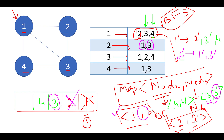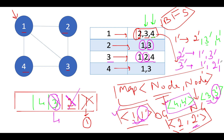Next, we retrieve node 3 from the queue and check all its connections: 1, 2, and 4. For neighbor 1: present in the map — retrieve 1' and create a connection between 3' and 1'. For neighbor 2: present in the map — retrieve 2' and establish a connection between 3' and 2'. For neighbor 4: present in the map — retrieve 4' and establish a connection between 3' and 4'. We are done with node 3.